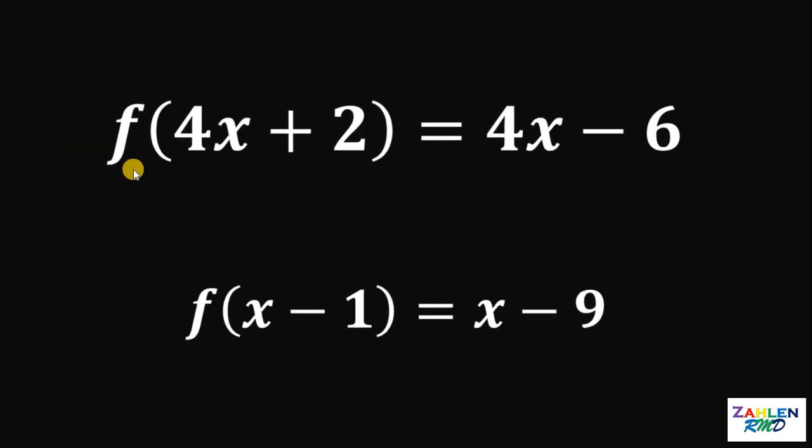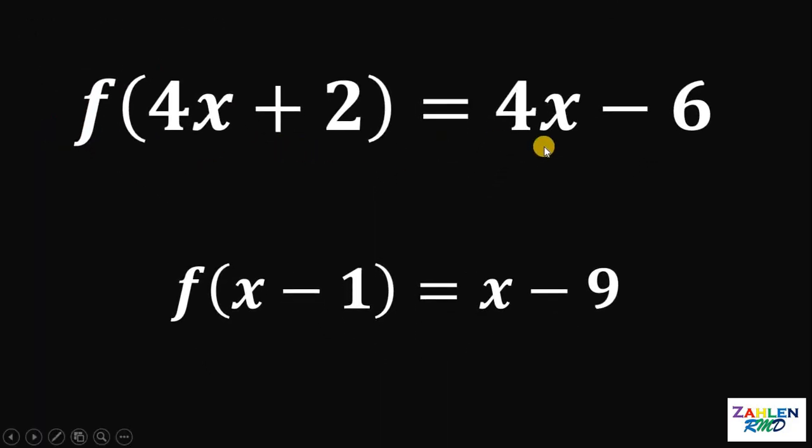Therefore, if we have f of 4x plus 2 equals 4x minus 6, then the value of f of x minus 1 is simply x minus 9. And as always, we are done.